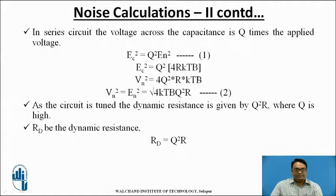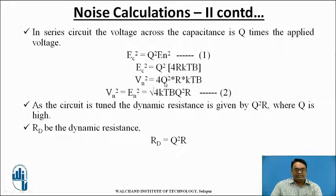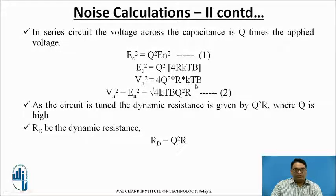Hence the final equation is VN² = 4Q²R × KTB. Here Q is the quality factor, R is the total resistance of the RLC circuit, K is Boltzmann's constant, T is the temperature, and B is the effective bandwidth.